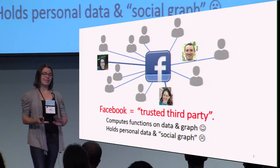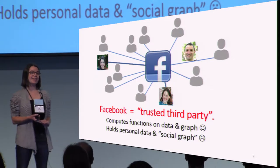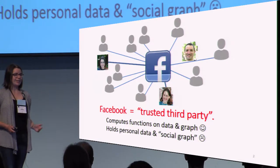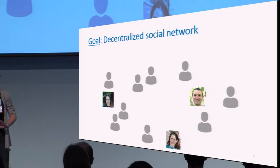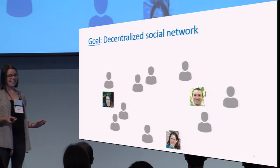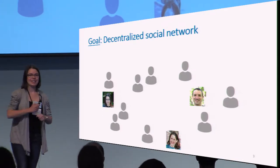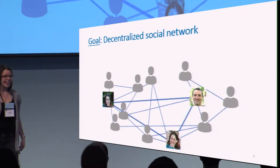This comes at the price of Facebook knowing all of your personal data and all of your friends. And this is, for example, why one of our co-authors doesn't use Facebook. So what if we wanted to get a decentralized social network? That way I could talk to one of my co-authors over Facebook now.